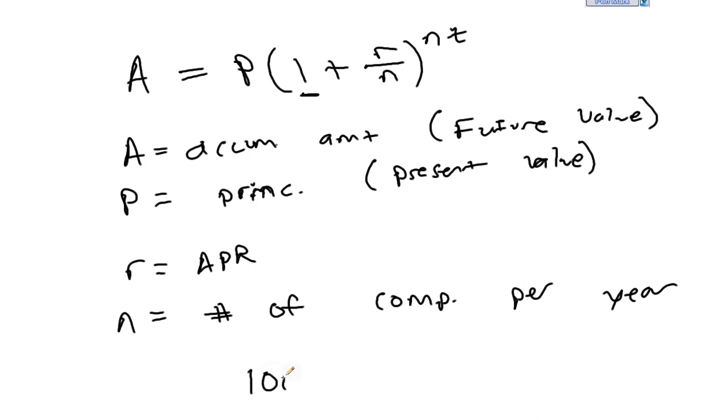So we took our initial value, our present value, times 1 plus the rate, which has to be as a decimal. We never work with rates as whole numbers unless told that we need to. And in this case, we were only looking at one month.